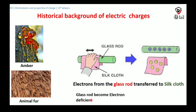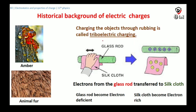Since the electrons transferred to the silk cloth, the silk cloth becomes electron rich — it has more electrons. So the glass rod becomes positively charged and the silk cloth becomes negatively charged. This kind of charging while rubbing is known as triboelectric charging — charging objects through rubbing is called triboelectric charging.